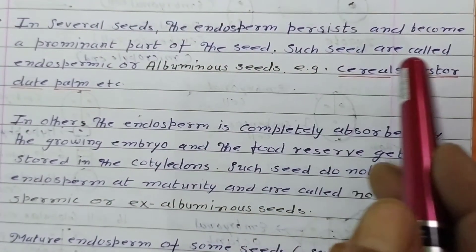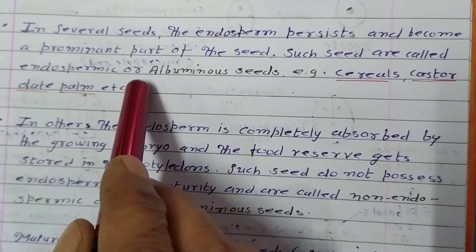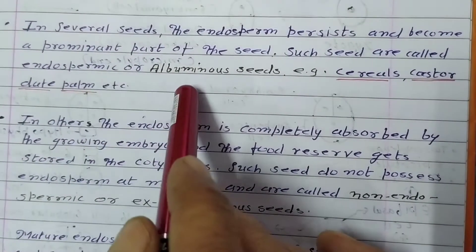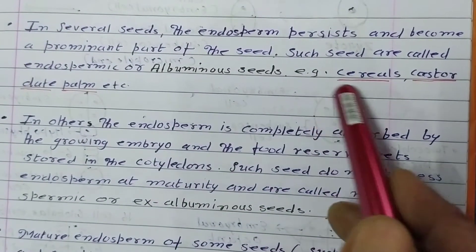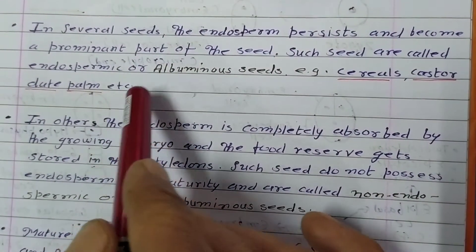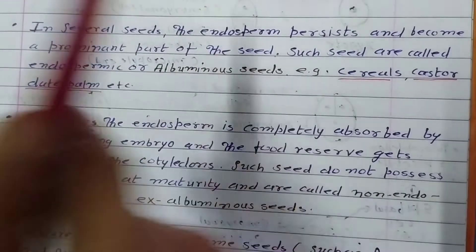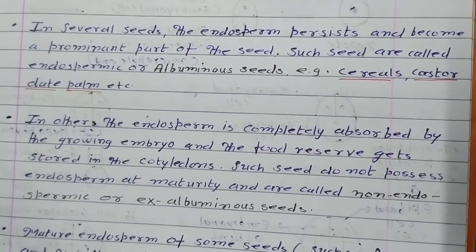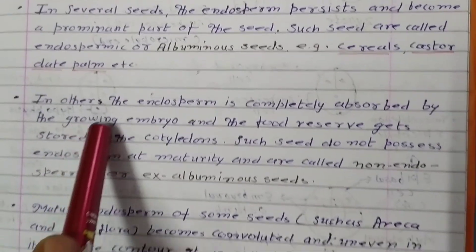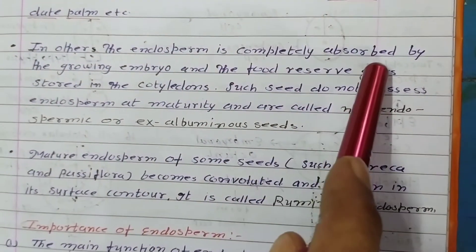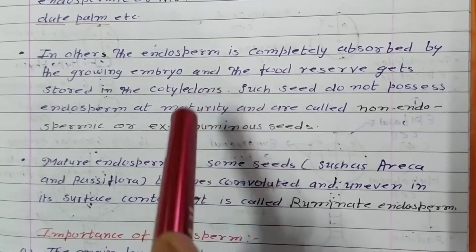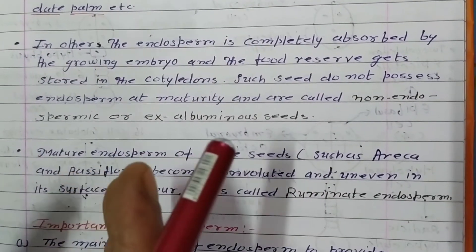In some seeds, the endosperm persists and does not decrease — such seeds are called endospermic seeds or albuminous seeds, as seen in cereals, castor, and date palm (khajoor), where the endosperm remains persistent in the mature seed.